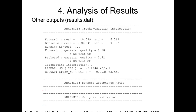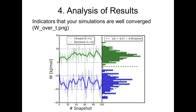One check to determine whether simulations are well converged is the w_over_t.png file. The left part of this graph shows the work value over time. If the work value fluctuates around a central value rather than skewing in one direction or showing a large jump, you can assume that the simulated state is decently well equilibrated.